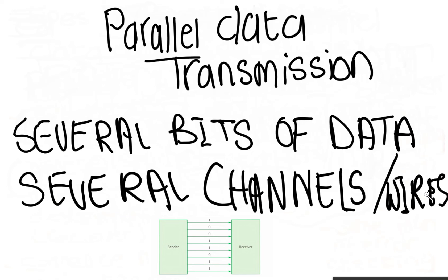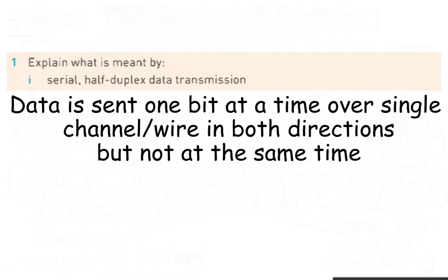Note that both serial data transmission and parallel data transmission can be simplex, half-duplex, or full-duplex. Activity: Explain what is meant by serial half-duplex data transmission. The correct answer is: data is sent one bit at a time over a single wire in both directions, but not at the same time.